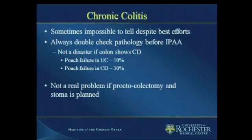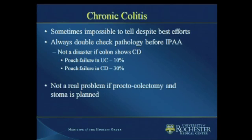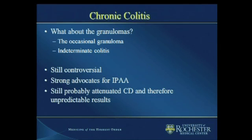We're all brought up to believe that if you do a pouch on a Crohn's patient, it's inevitably a disaster. Well, it's not actually inevitably a disaster. It can be, of course, and some patients only declare themselves as having Crohn's disease when they've had a pouch fashioned. But in ballpark figures, the overall pouch failure rate in UC is about 10%, and in Crohn's disease it's only about 30% — it's not an absolute catastrophe. It's not really an issue if you're proposing to do a proctocolectomy and stoma. There's a slightly murkier area around granulomas — the patient with the occasional granuloma or indeterminate colitis. Those areas are still controversial, and I would suggest the results are still slightly unpredictable in these groups, but it is worth having a dialogue with the patient.